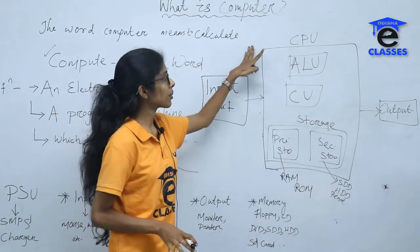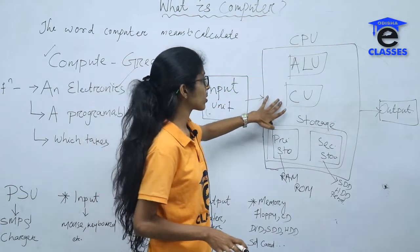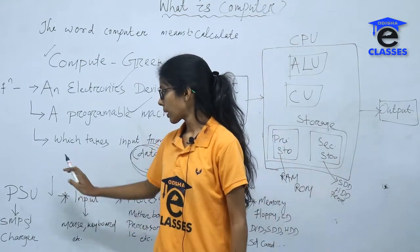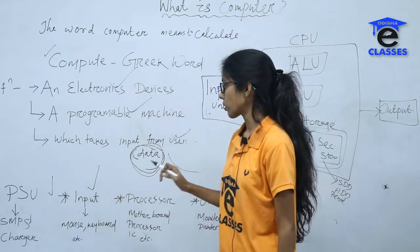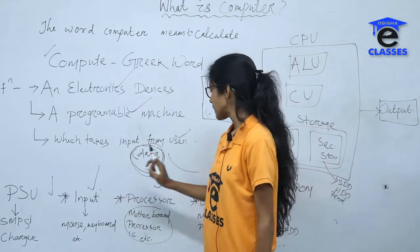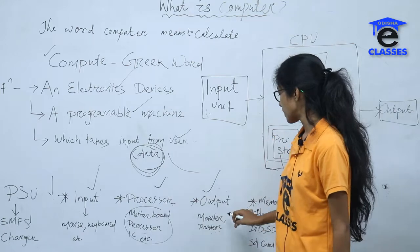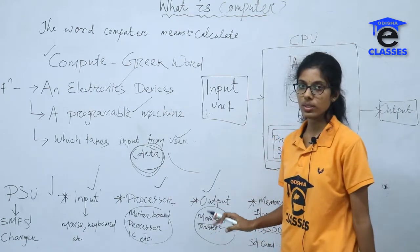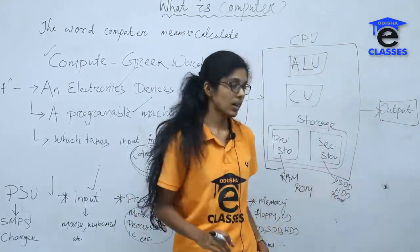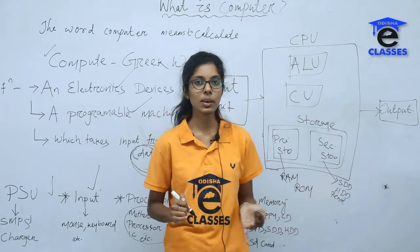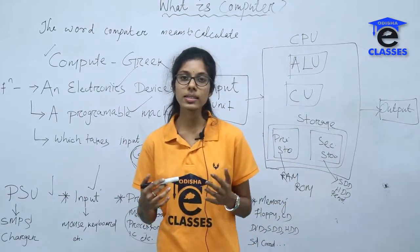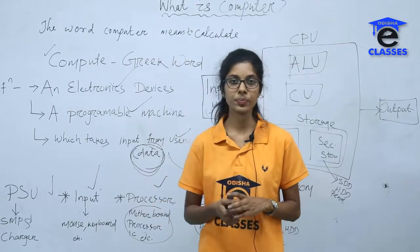We also covered the block diagram of a computer — input goes to the CPU for processing and output is provided — as well as the PSU (Power Supply Unit), input devices, output devices, memory units, and networking devices. In the next class we will discuss other hardware devices in more detail. Thank you.